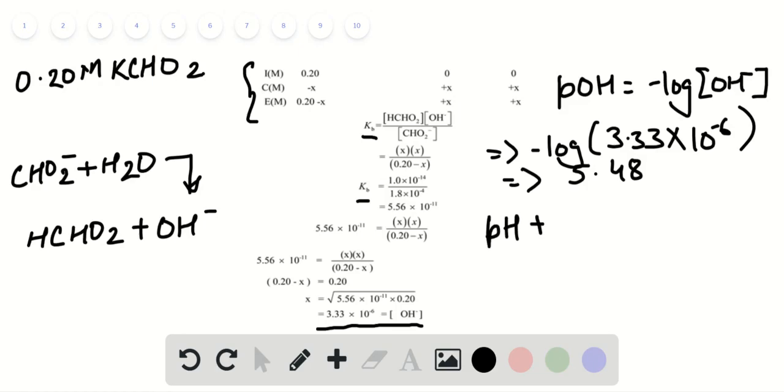We have the relation pH plus POH equals 14. Substituting the value of POH, pH turns out to be 14 minus 5.48, which equals 8.52.